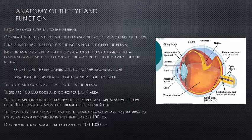The rods and cones are embedded in the retina. There are 100,000 rods and cones per meter squared of area, which means there are 100 million rods and 6 million cones in the eye. The rods are only in the peripheral of the retina and are sensitive to low light — they really cannot respond to intense light, only about 2 lux.